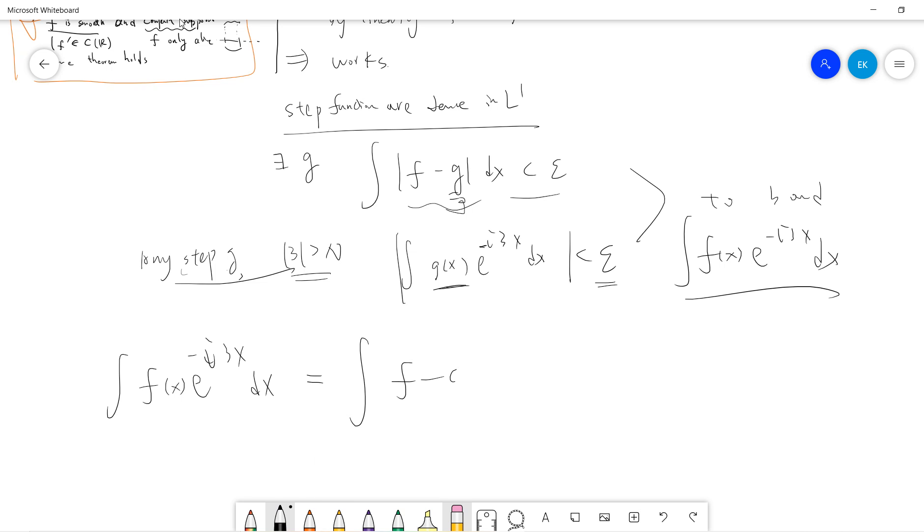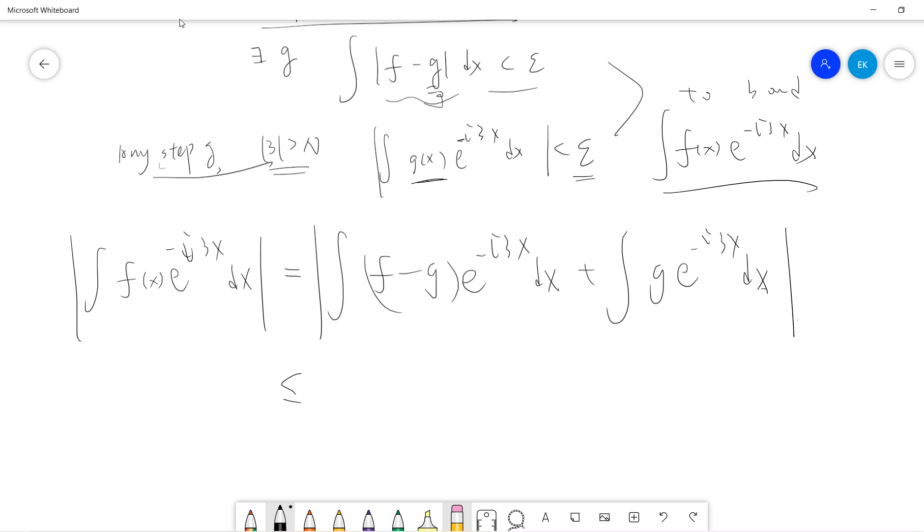This equals integral f minus g exponential i plus cx plus g exponential minus i plus cx dx. And we take the absolute value. So this is less than integral f minus g exponential i dx plus absolute value of integral g.